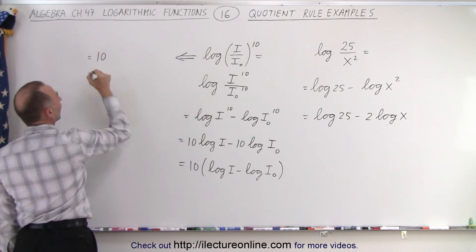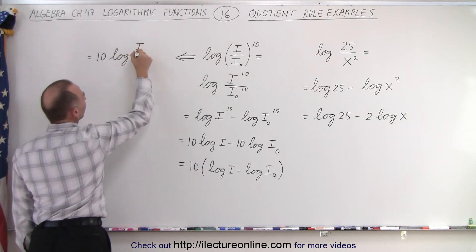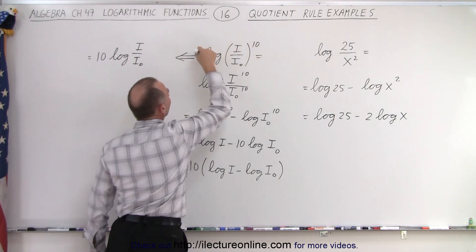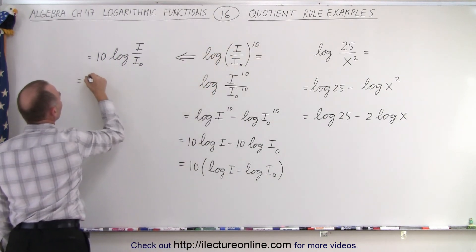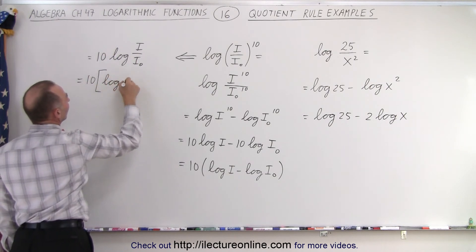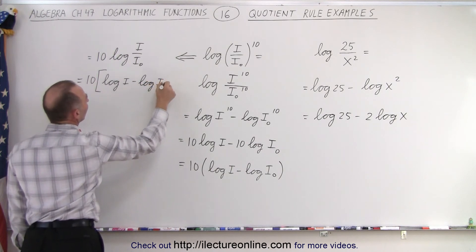This is the same as 10. I'll write it like this. 10 times the log of i divided by i sub naught, simply by using the power rule and moving the 10 in front. And then this can be written as 10 times the log of i minus the log of i sub naught.